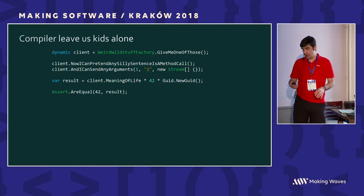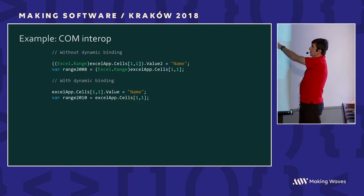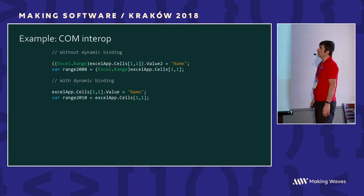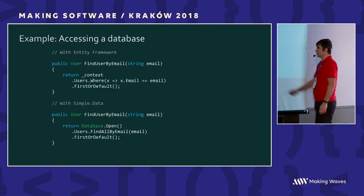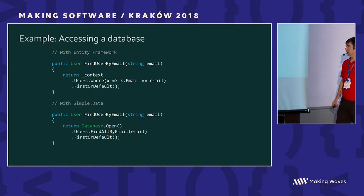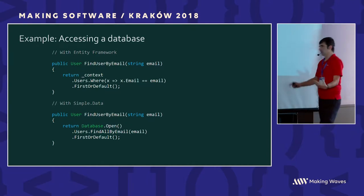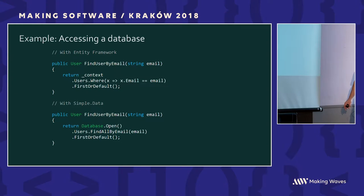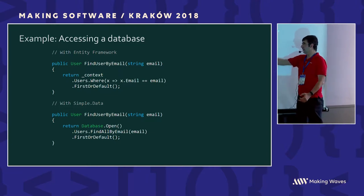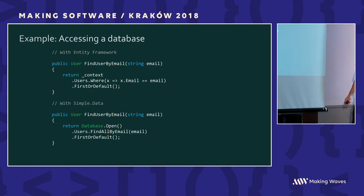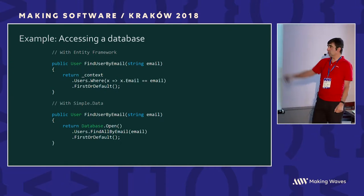Sometimes it has its value. For example, you can use dynamic binding in COM interop to avoid casting. You can access a database — this is an example from SimpleData, one of the so-called micro ORMs. The convention says: we call database.open.users.find_all_by_email. We assume there is a table called users and a column called email, and it translates to 'select from users where email equals the address' — a radical way, but a quite popular library.